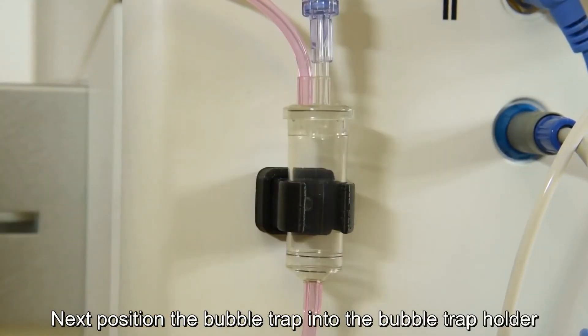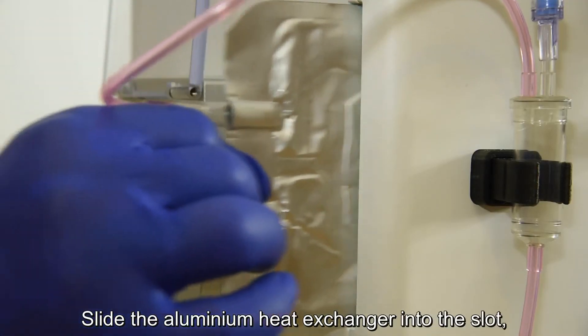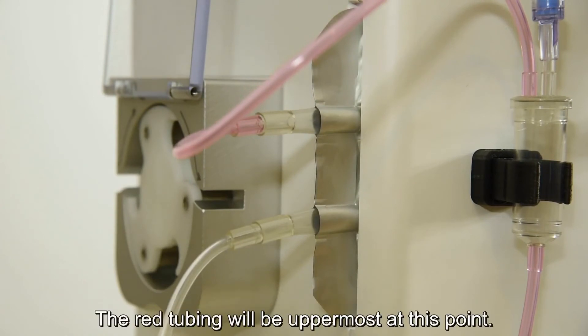Next, position the bubble trap into the bubble trap holder with the blue valve pointing upwards. Slide the aluminium heat exchanger into the slot, being careful not to damage the foil and ensuring it is fully inserted. The red tubing will be uppermost at this point.